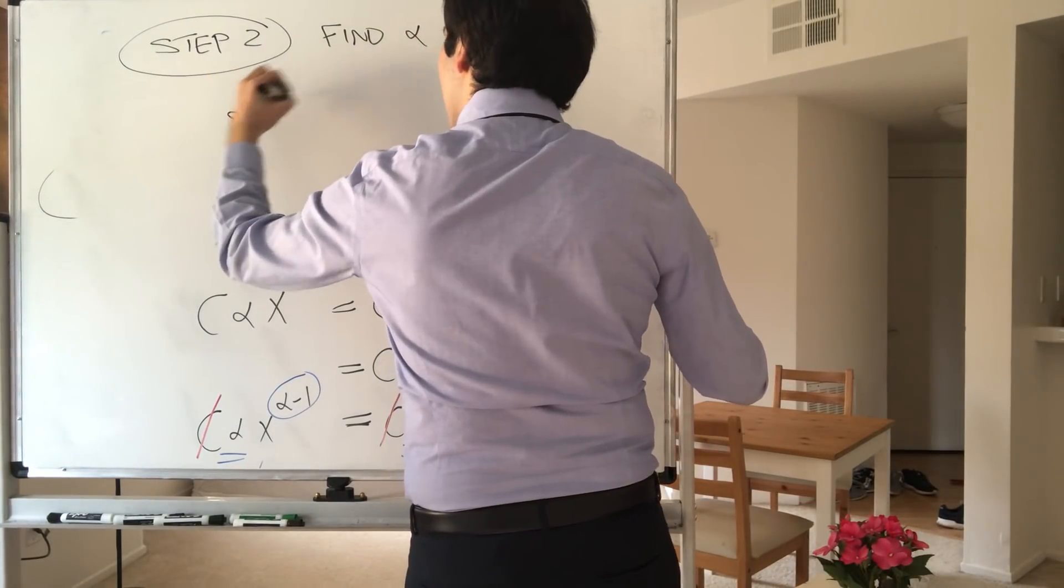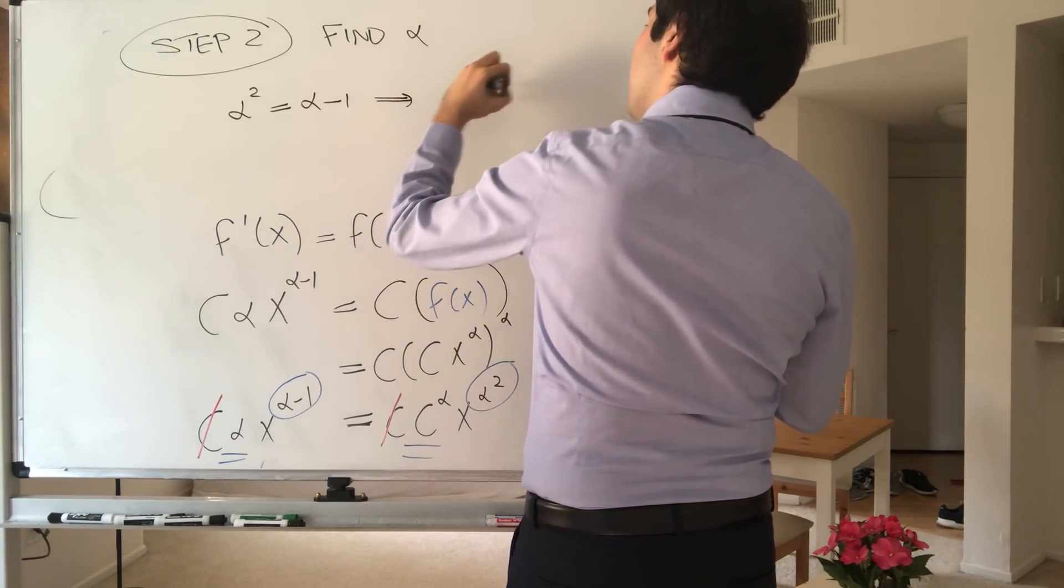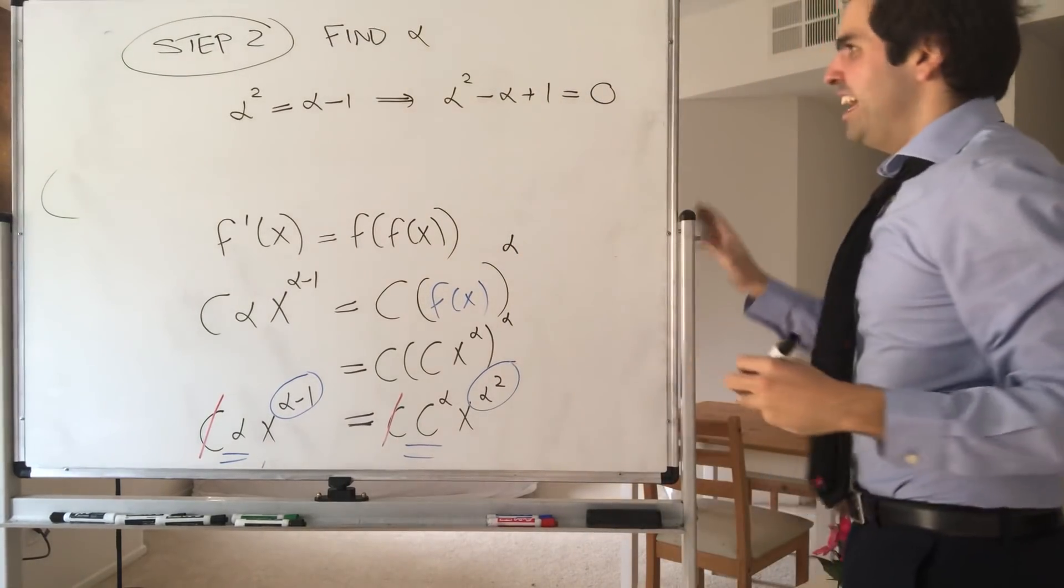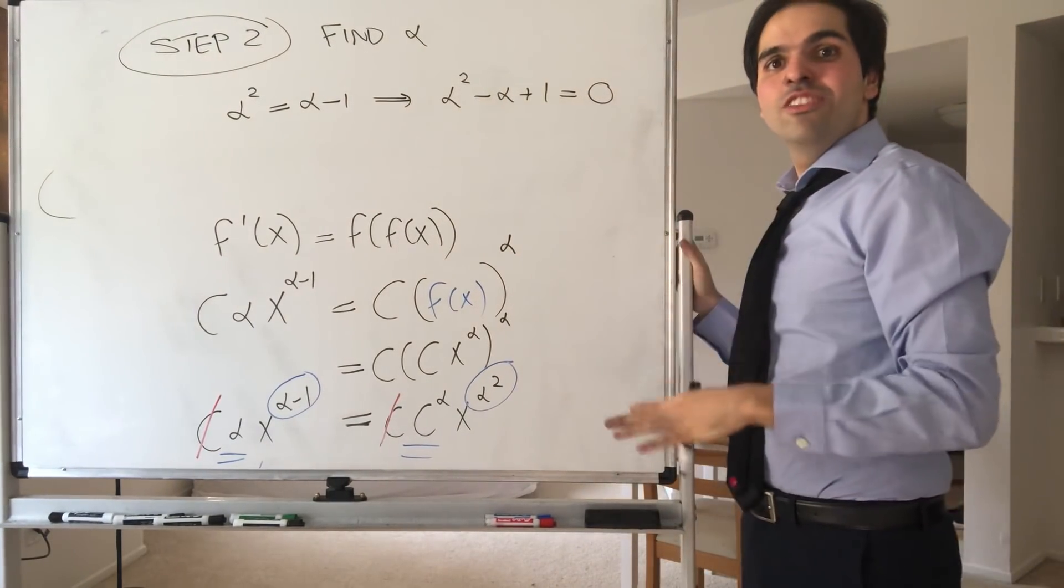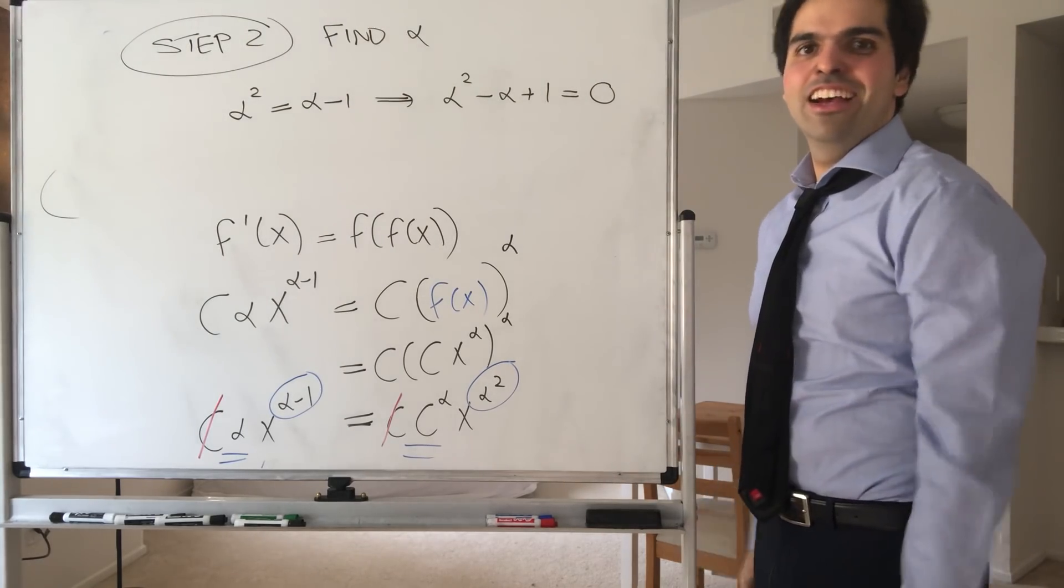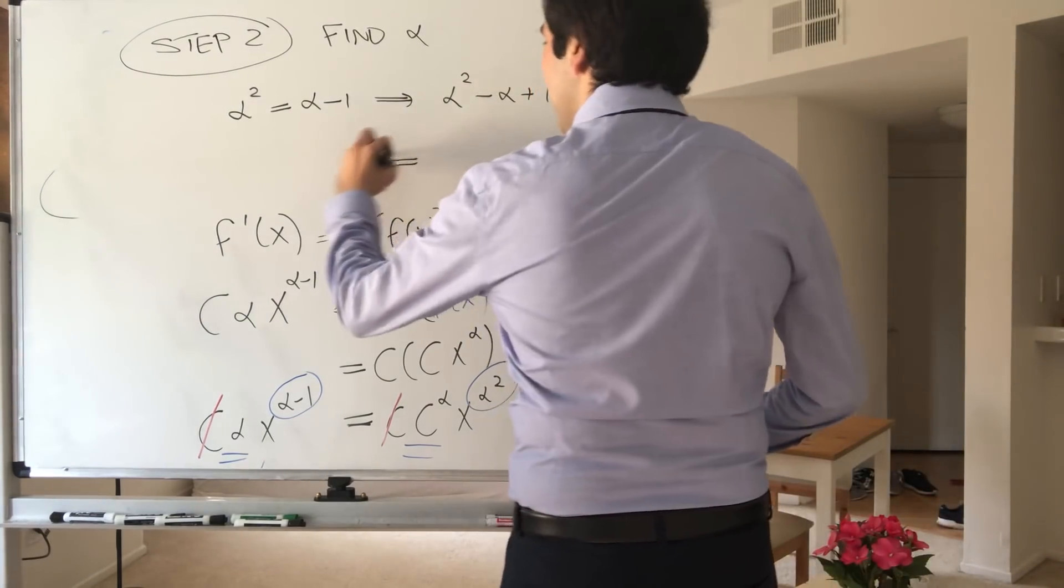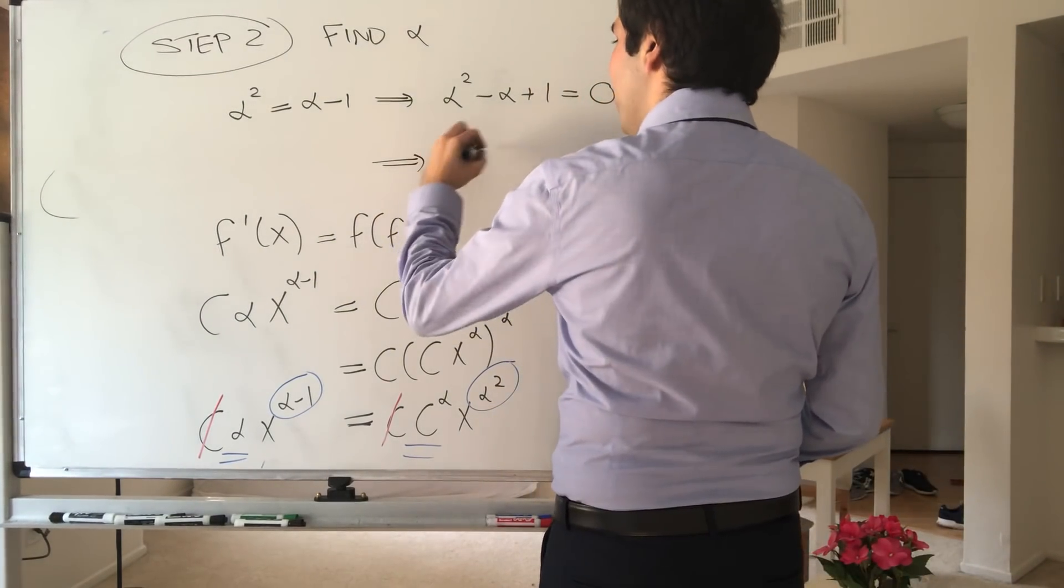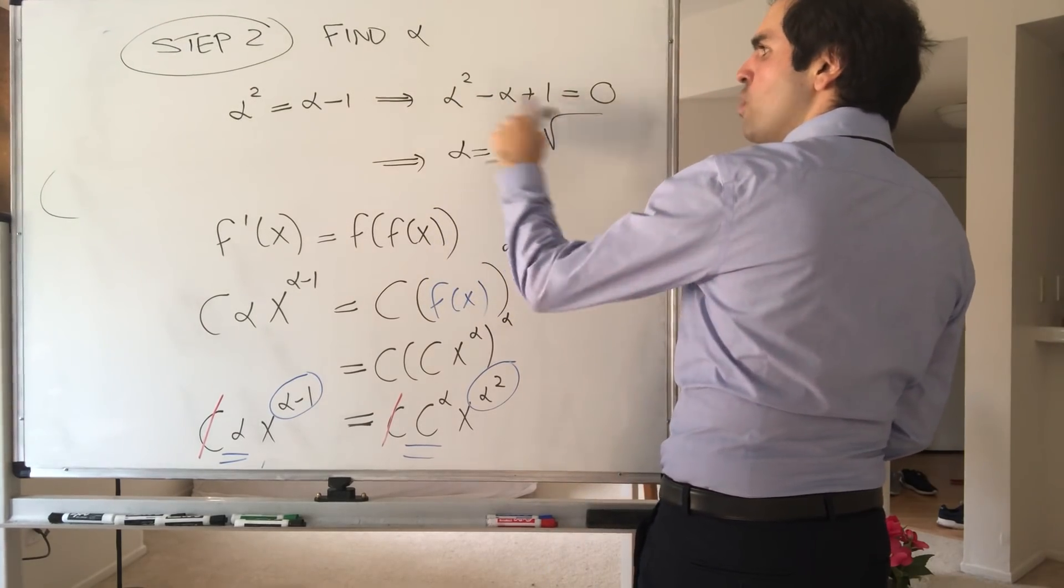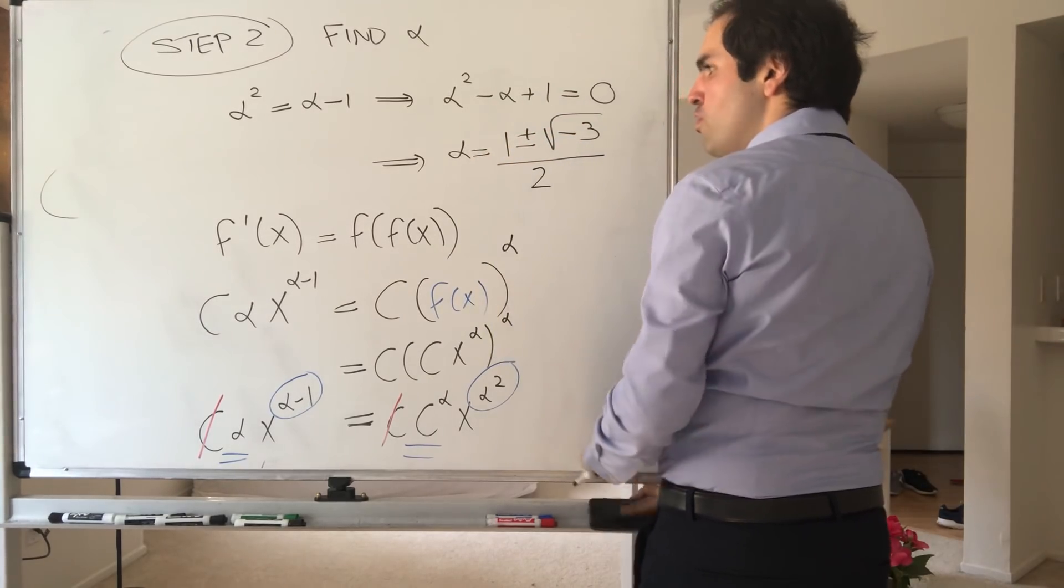So alpha squared equals alpha minus 1, which gives you alpha squared minus alpha plus 1 equals zero, and, well, you could either do it with the awesome Po-Shen Lo way, or with the boring quadratic formula way. Well, let's do the boring quadratic formula way. So then, what we get is alpha equals 1 plus or minus square root of 1 squared minus 4, so square root of minus 3 over 2.